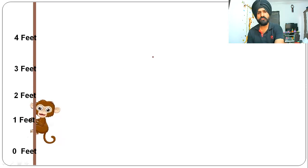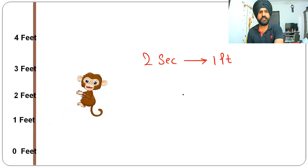So in two seconds, the monkey will be at one foot mark effectively. In two seconds he travels only one foot. In the next second he will again have a jump of three feet, so he will reach the four feet mark.